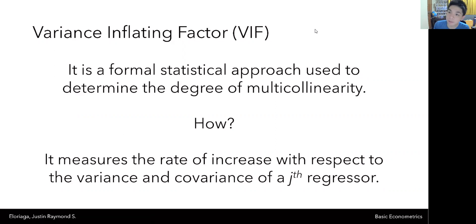One way for us to test whether multicollinearity exists in our model is to use what we call the variance inflating factor or VIF for short. It's a formal statistical approach used to determine the degree of multicollinearity. How does it do that? Well essentially what it does is it measures the rate of increase with respect to the variance and covariance of a jth regressor.